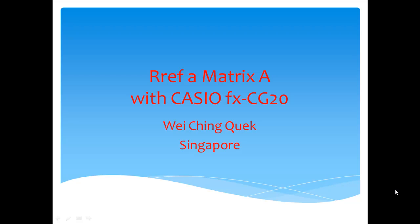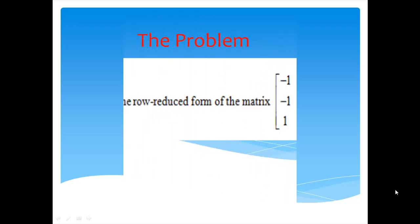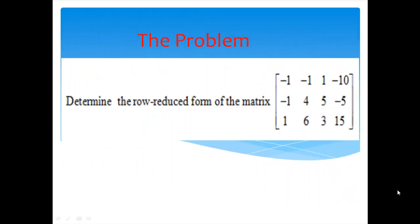This video will show you how to find the row reduced form of a matrix with Casio FX-CG20. The problem is to determine the row reduced form of this 3 by 4 matrix.